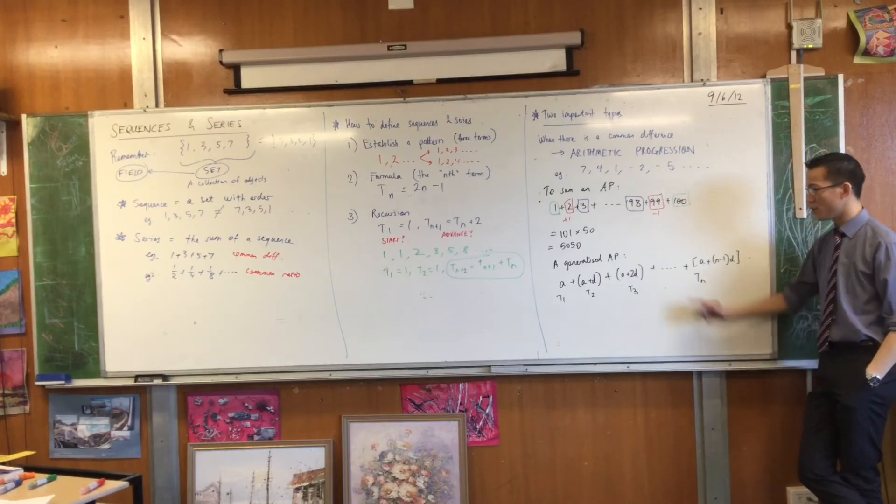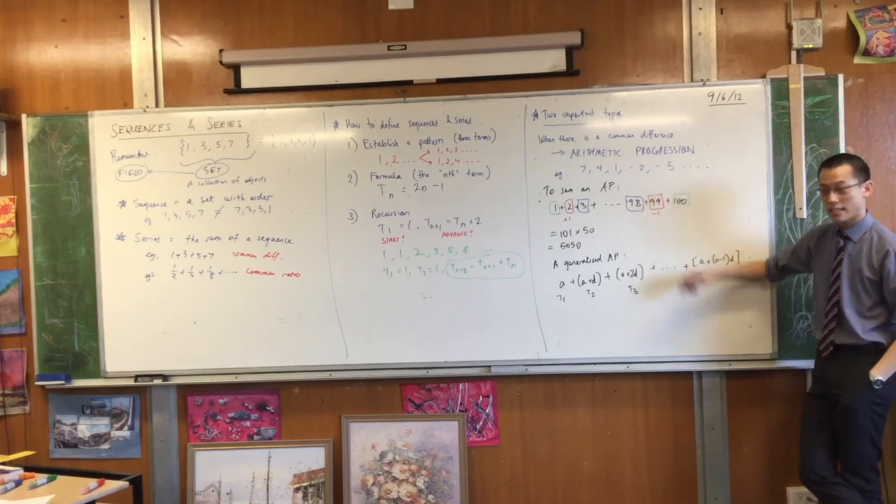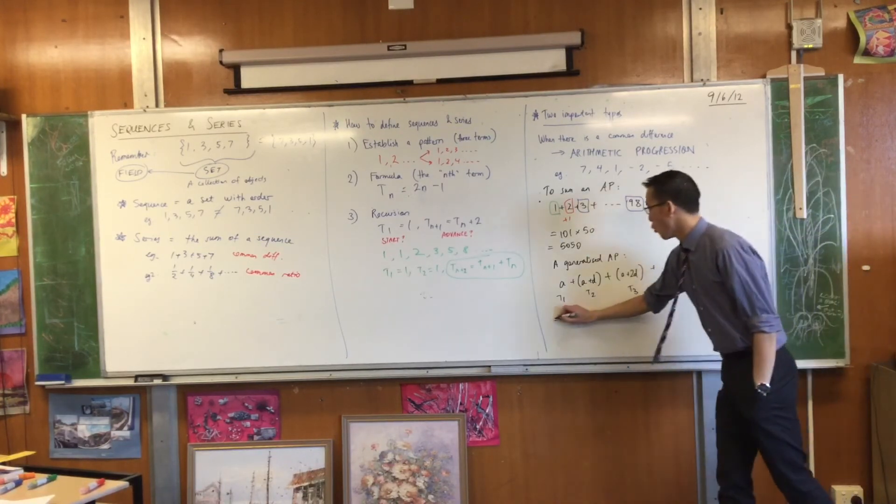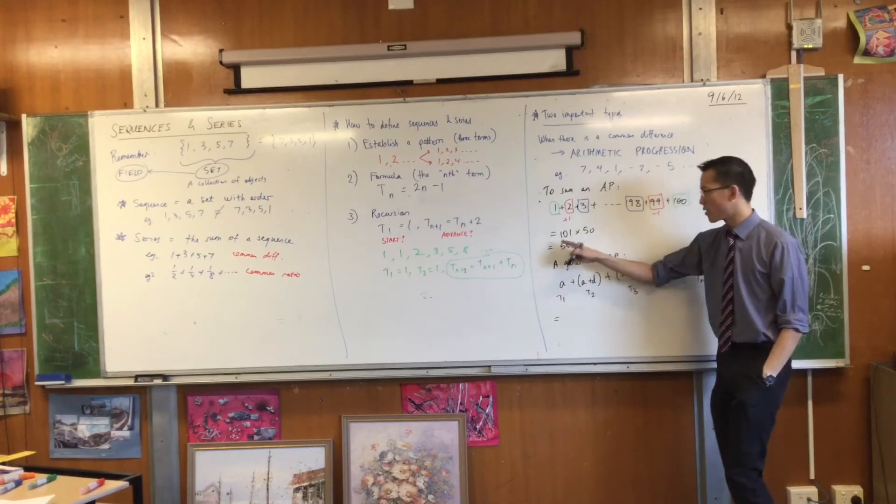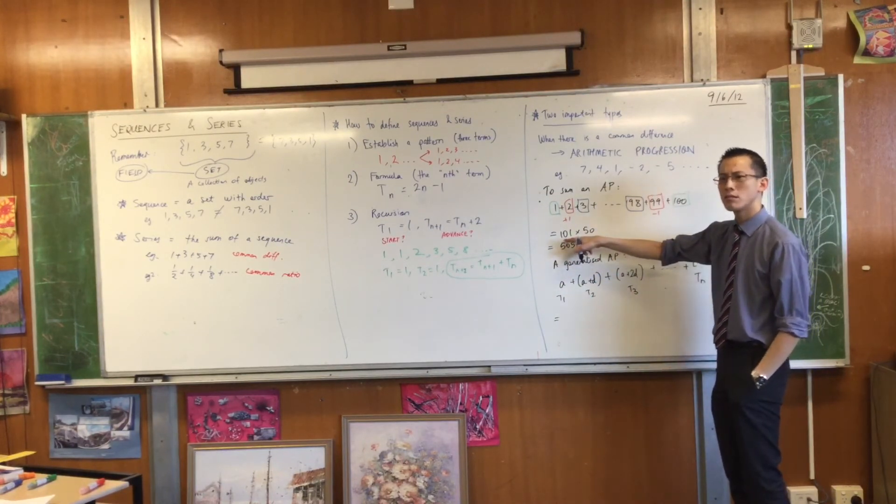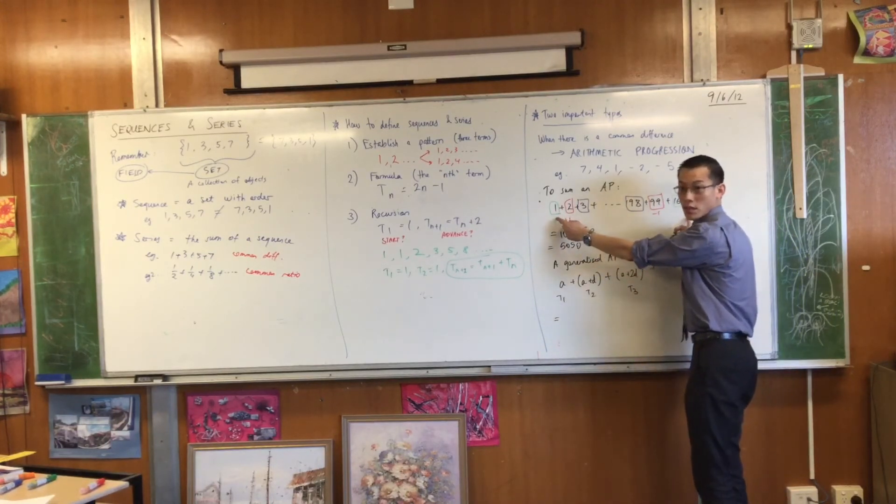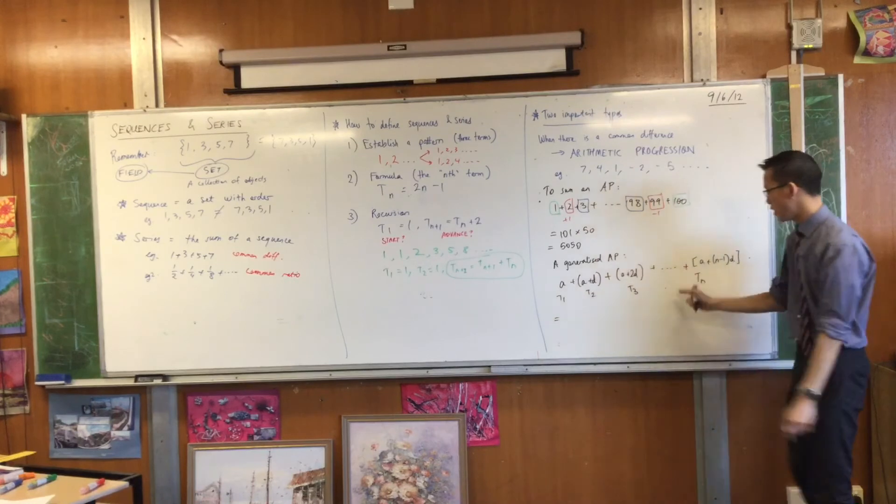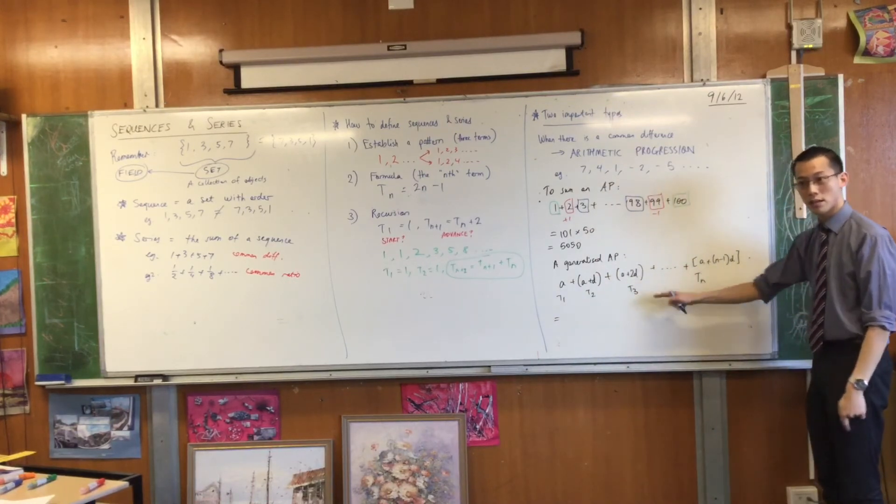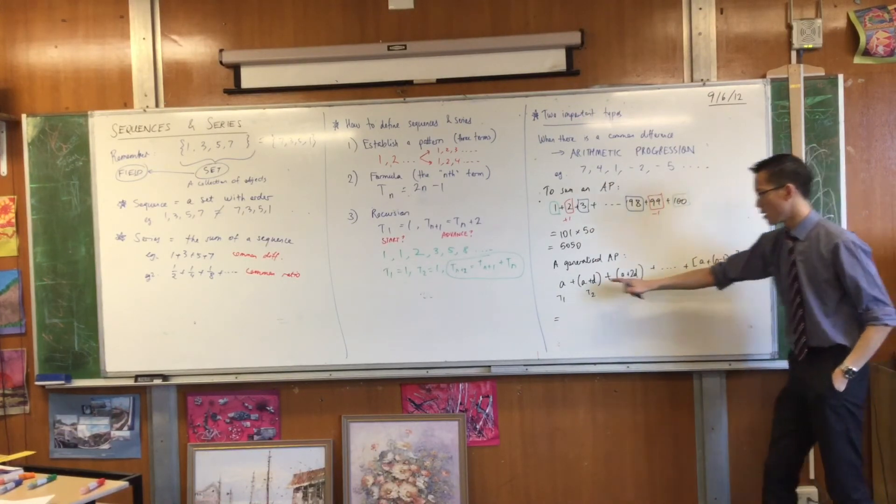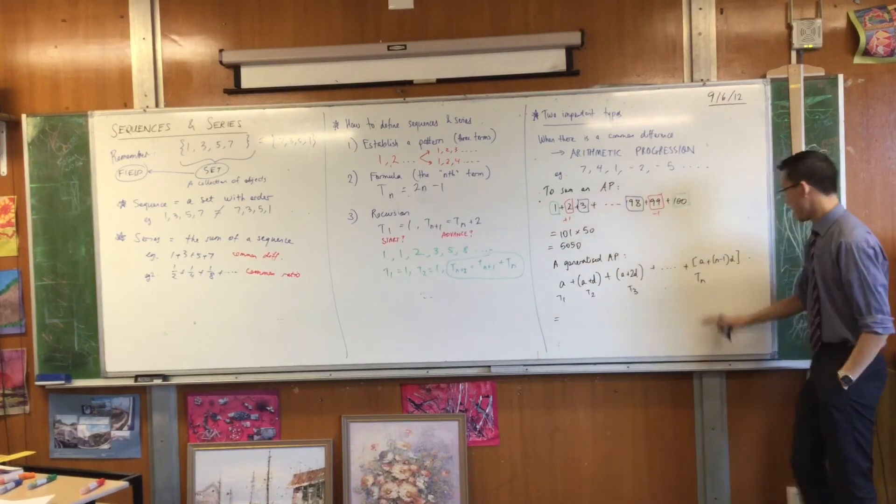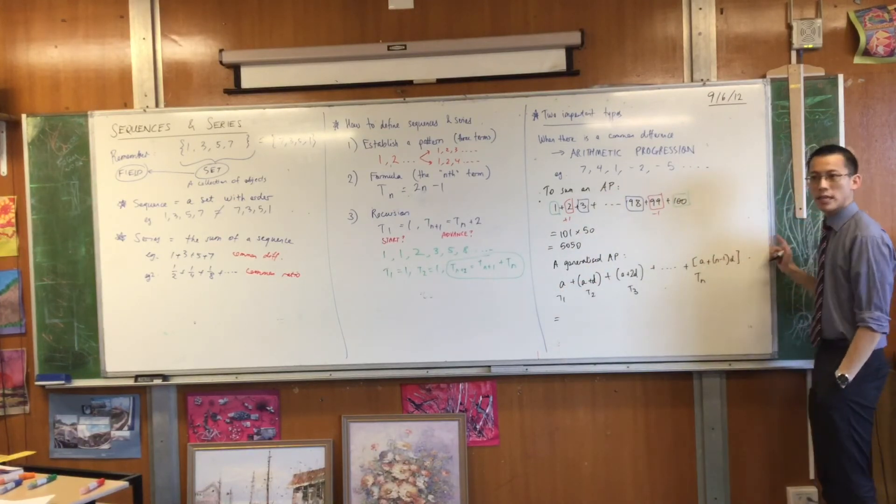So, now we can work out, using this, we can apply this same strategy, right? 101. Where did this number come from again? The sum. It was the sum of the first and last terms, right? So, in this case, the sum of the first and last terms is going to be a plus a plus n minus 1d. Is that okay?